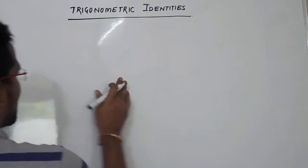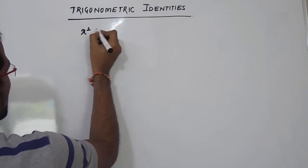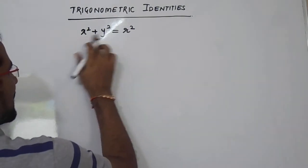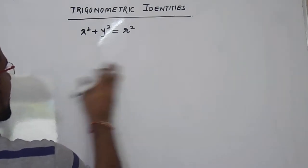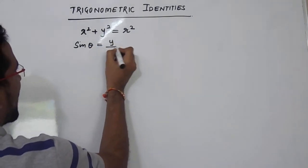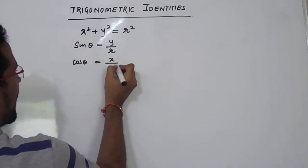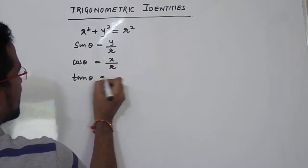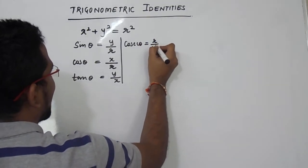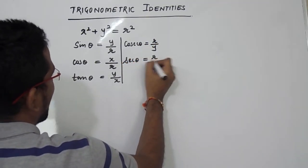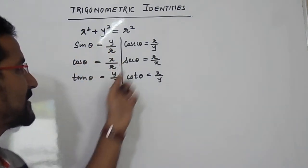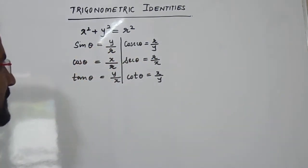The first result we got is x² + y² = r², where r is the radius of the circle and x and y are the coordinates of a point on that circle. Then we got the relation of sine function: sin θ = y/r, cos θ = x/r, tan θ = y/x. The reciprocal functions: cosec θ = r/y, sec θ = r/x, and cot θ = x/y. These are the six relations we got for the different trigonometric functions.